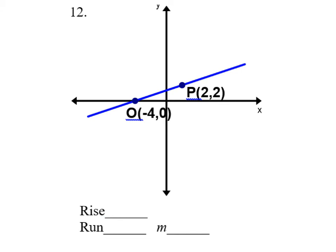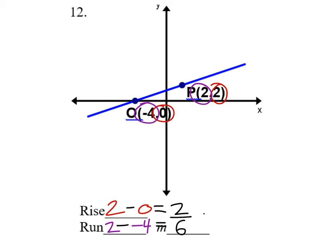Same thing on number twelve. Looking at the y values for the rise: two and zero — subtracting gives two. The run uses the x values two and negative four, and we need to subtract these: two minus negative four is the same as two plus four, which is six. So two divided by six simplifies to one-third.